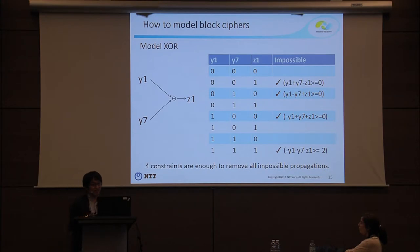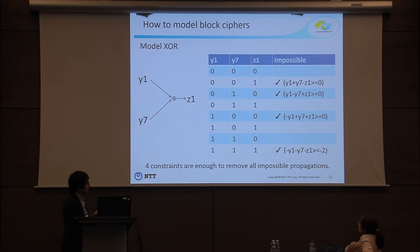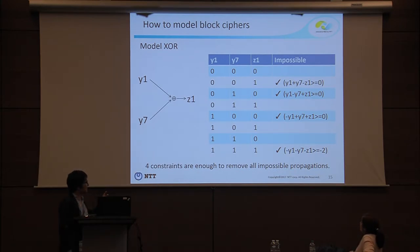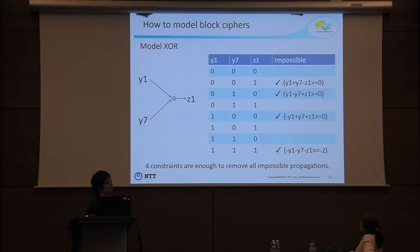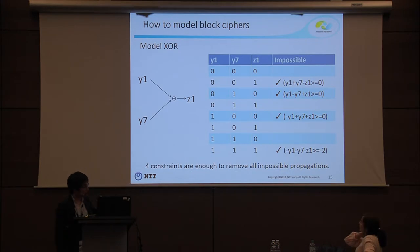Next, the linear layer. The linear layer is represented as follows. For example, z1 equals y1 XOR y7. This table is the differential distribution table for XOR, where 001, 010, 100, and 111 are impossible propagations. We remove these four propagations by introducing four inequality constraints.